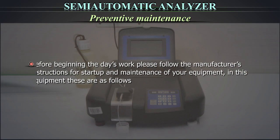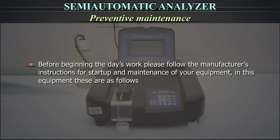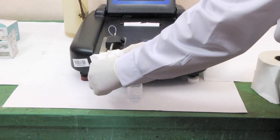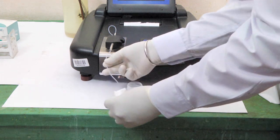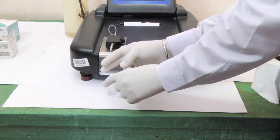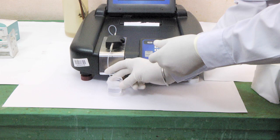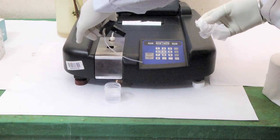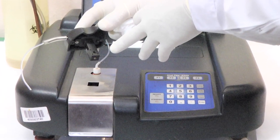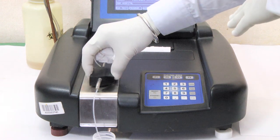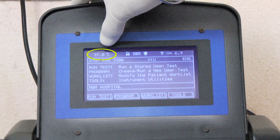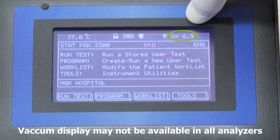Preventive Maintenance: Before beginning the day's work, please follow the manufacturer's instructions for start-up and maintenance of your equipment. In this equipment, these are as follows: cleaning of the probe with distilled water — clean the outside of the probe gently with tissue paper and then with distilled water to dislodge any debris that might have collected inside. Be careful to clean the probe gently, avoiding any bends in the orientation of the probe. Pull out the flow cell gently and check if the window has any dust; if so, clean carefully with a tissue paper and place it back gently. Temperature should be fixed at 37 degrees Celsius and should be achieved within 1–2 minutes of switching on the equipment.